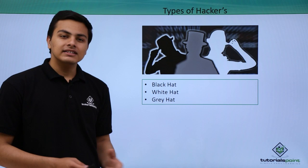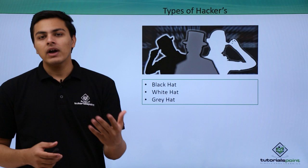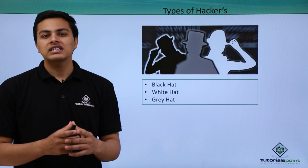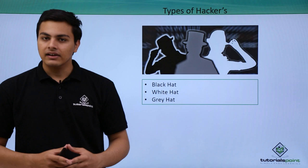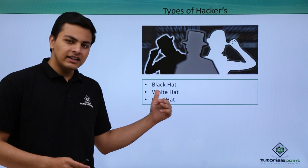Black hat hackers are very dangerous because they are not associated with any company. They do hacking in order to harm people or organizations and to steal sensitive information. White hat hackers, on the other hand, are associated with a particular organization and always do hacking in order to protect their company's data from other hackers. Gray hat hackers are actually a combination of black hat and white hat hackers.